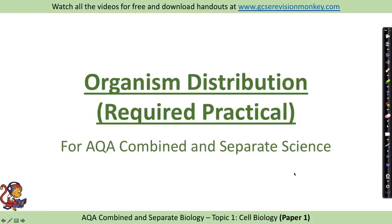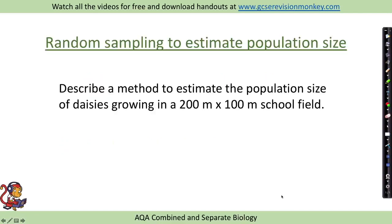Organism Distribution Required Practical. There are two different ways that we are going to look at to sample organisms. The first one is random sampling and the second one is transects.